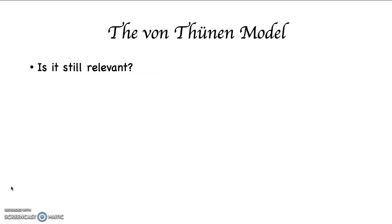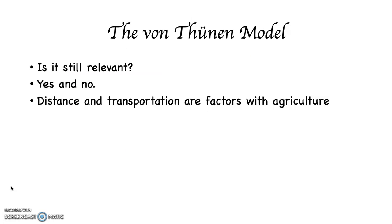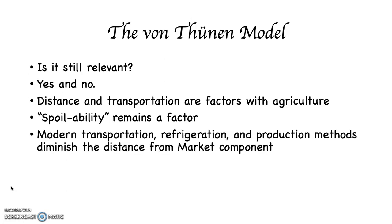So is the von Thünen model still relevant today? It's kind of a yes and no. Distance and transportation are still factors with agriculture. Spoilability remains a factor, but modern transportation, which is quicker, refrigeration and production methods kind of diminish the distance from market component. They don't eliminate it, but they diminish it.